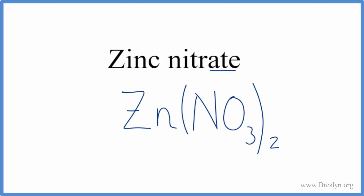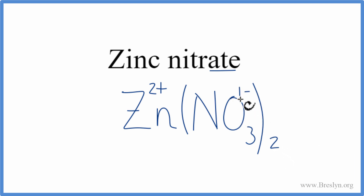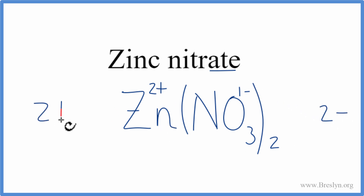Let's check our work and make sure we got it right. We have two plus for the zinc, and one minus for the nitrate. We have two nitrate ions, and each one is one minus, so two times one minus is two minus. One times two plus is two plus. These add up to zero, giving us a net charge of zero. This is the correct formula for zinc nitrate.